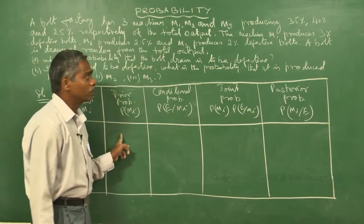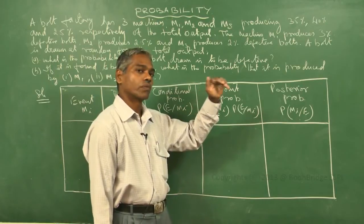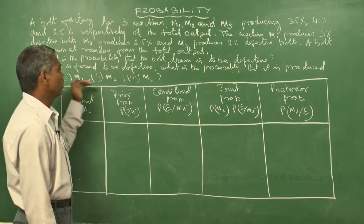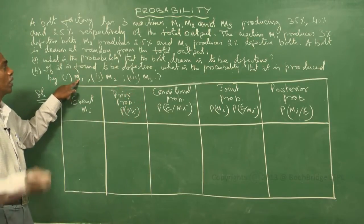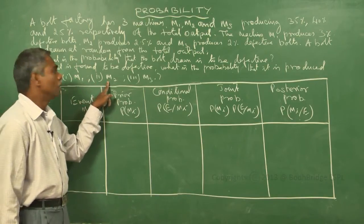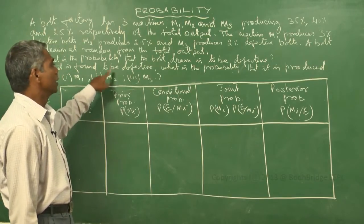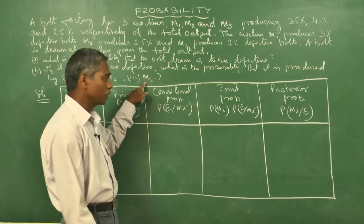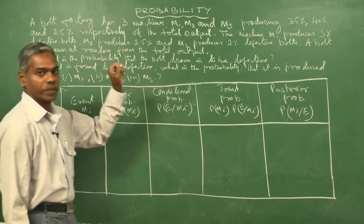Let E be the event of choosing a defective bolt. So we use M1, M2, M3, and E — all four events. M1 is the event that the bolt is produced by machine M1; M2 is the event that the bolt is produced by machine M2; M3 is the event that the bolt is produced by M3; and E is the event that the bolt chosen is defective.